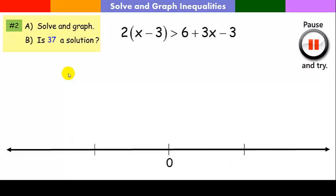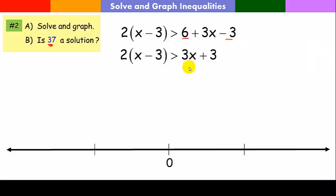Okay, let's try the next one. Notice it says solve and graph and it's asking is 37 a solution. So, go ahead. Okay, so the first thing we'll do, I could do a couple things. I'm going to combine like terms first. I just hate seeing all this stuff hanging out there. Next, I'm going to distribute. I'm going to start combining and collecting terms until I get it all the way down to here.